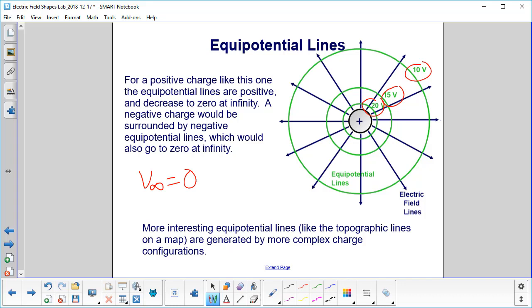A negative charge would be surrounded by negative equipotential lines. And what's the only difference there? This would be negative 10.